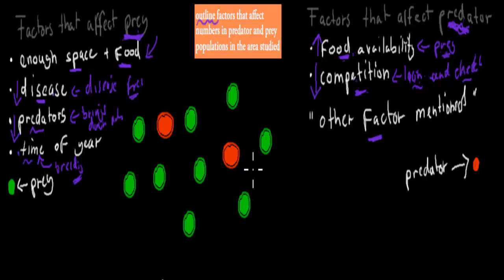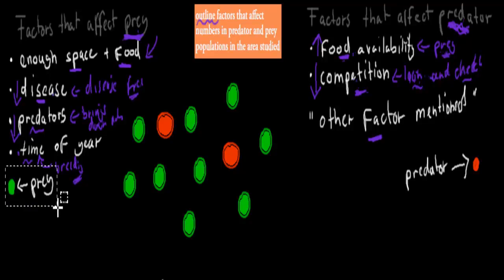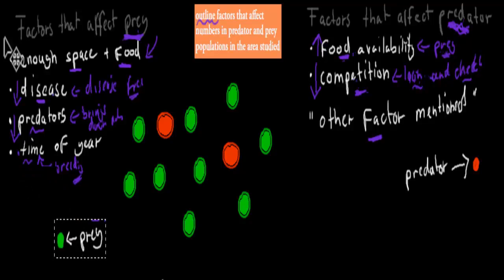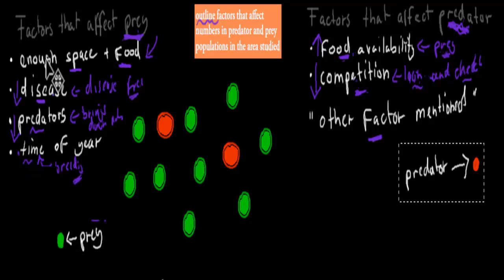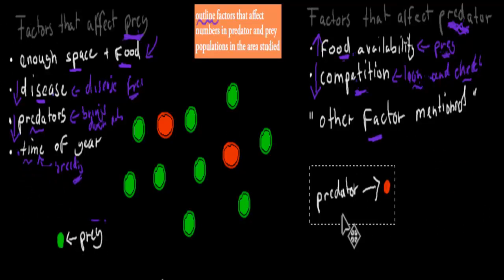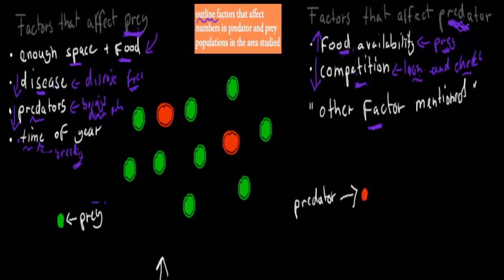To illustrate this, I've drawn a visual where the green dots represent prey and the red dots represent predators. Initially we have 9 prey and 2 predators.